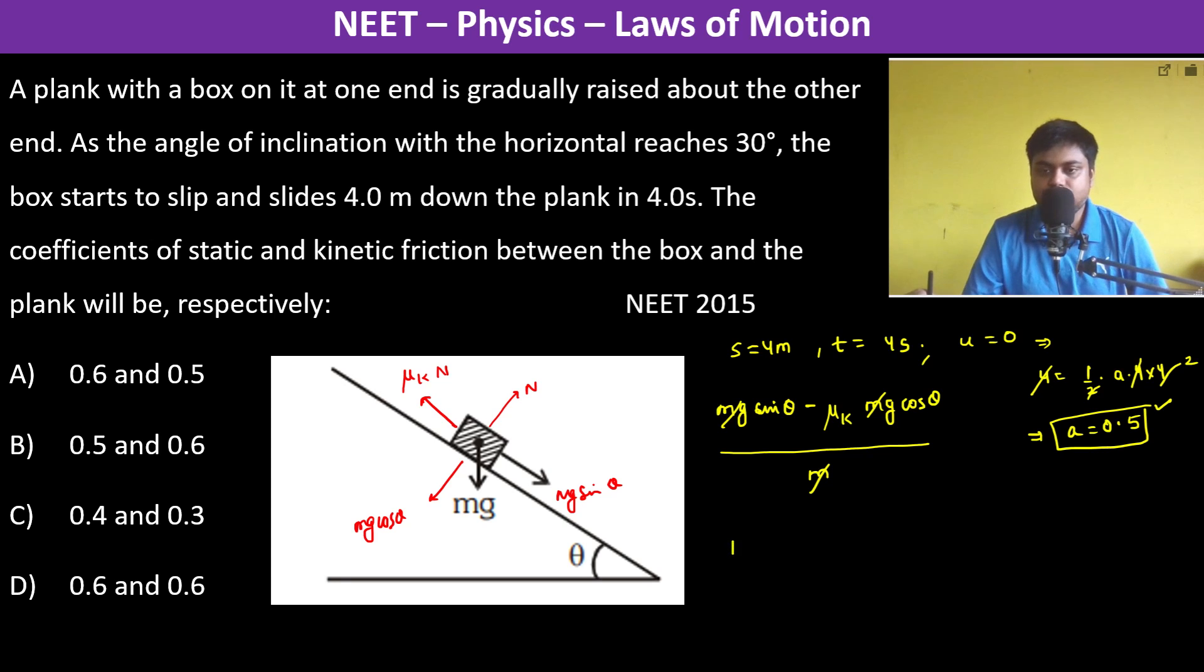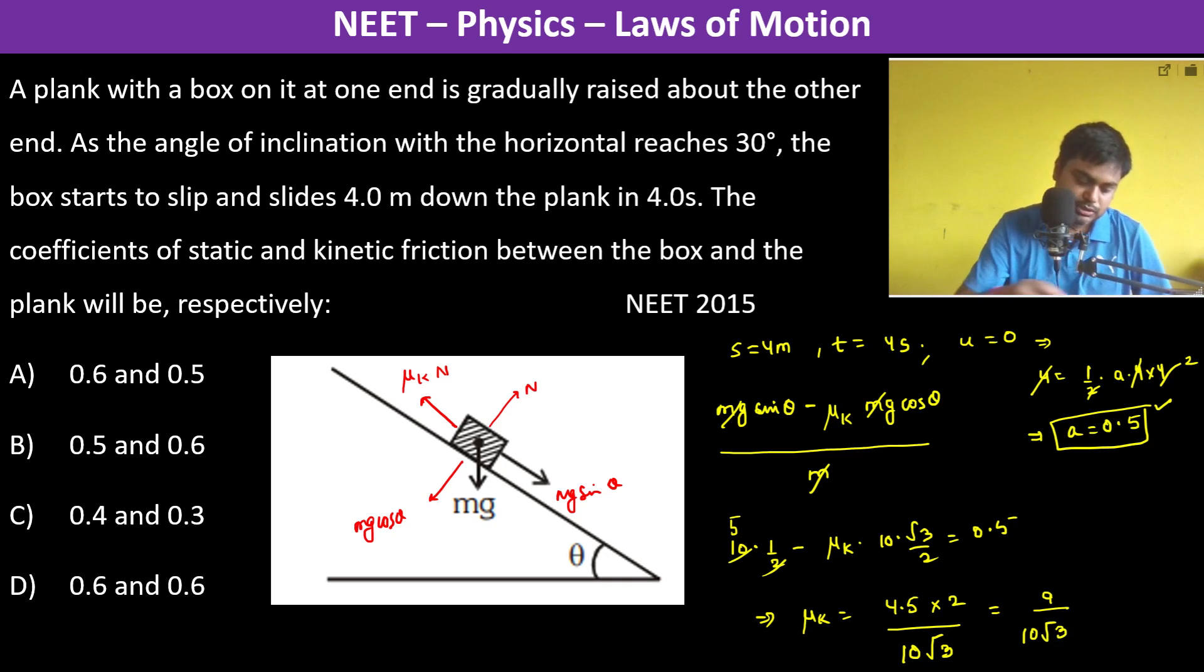So now we have g sin theta. So 10 into sin theta, 1 by 2, minus μk into 10 into root 3 by 2 is equal to 0.5. This is 5, so therefore μk is going to be 4.5 into 2 divided by 10 root 3.